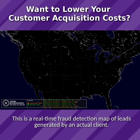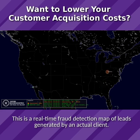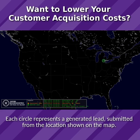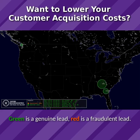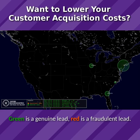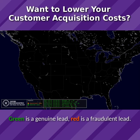This is a real-time fraud detection map of leads generated by an actual client. Each circle represents a generated lead submitted from the location shown on the map. Green is a genuine lead. Red is a fraudulent lead.